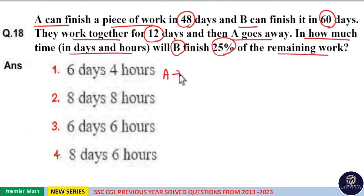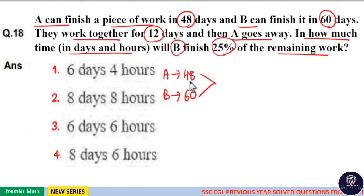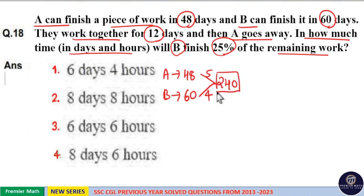Here A can finish a job in 48 days and B can finish a job in 60 days. Now both are finishing the same job, so take the LCM. LCM of 48 and 60 is 12 into 4 is 48, 12 into 5 is 60. So 12 into 5 into 4 is 240. Now 48 goes 5 times in 240, 60 goes 4 times in 240, which means 240 units is the total work.